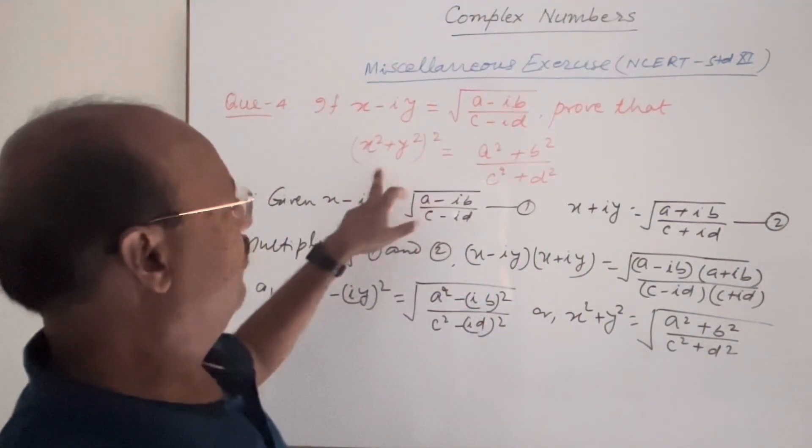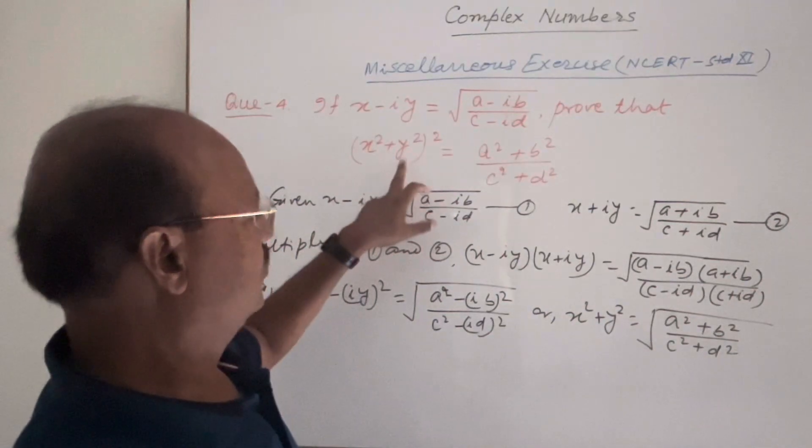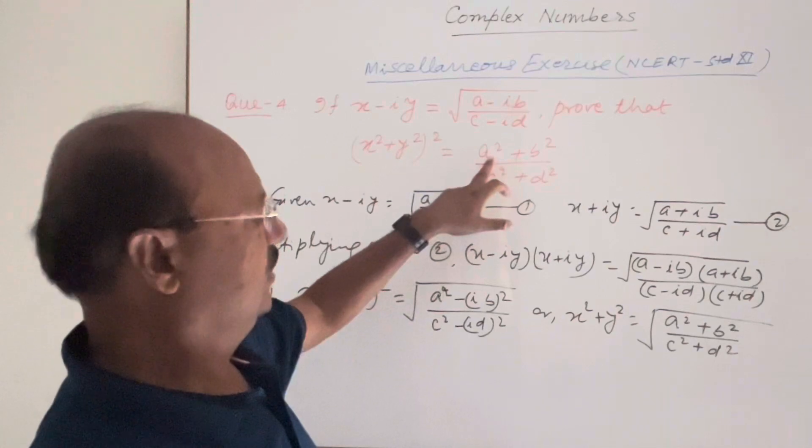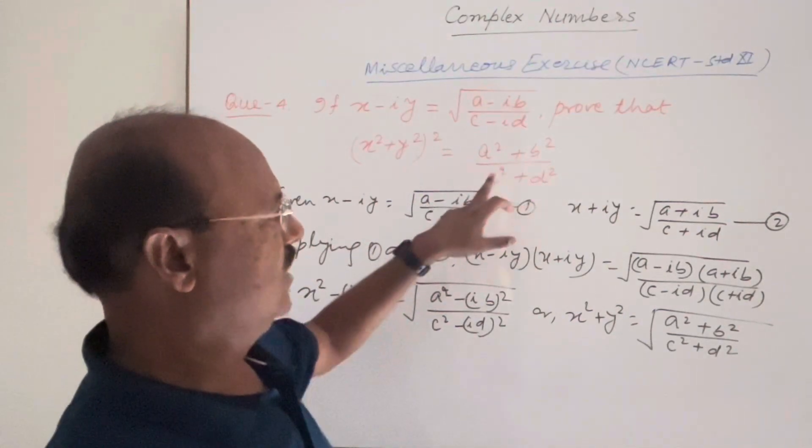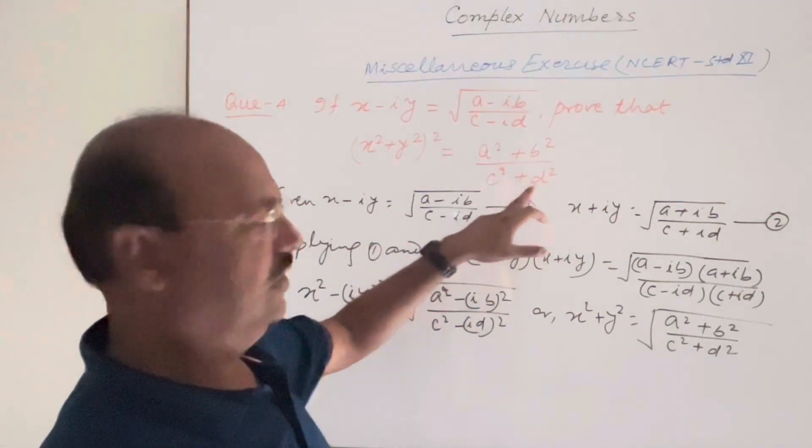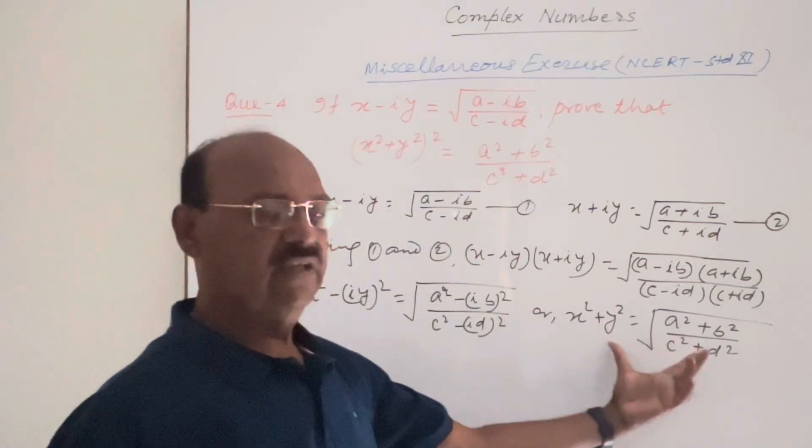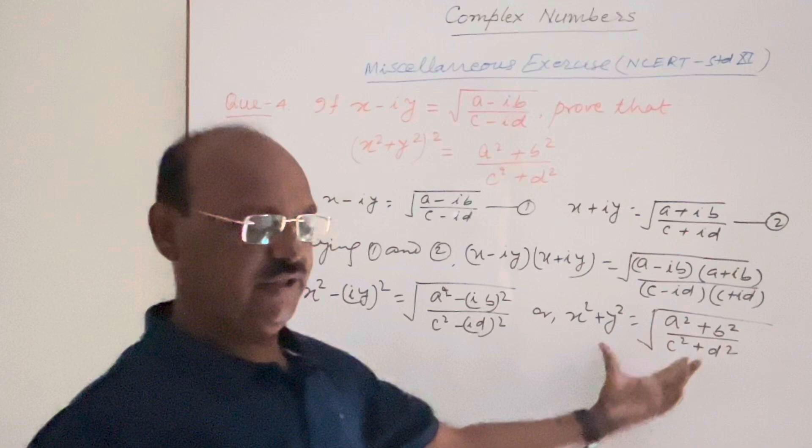Correct? You see here we have to prove x square plus y square whole square is equal to a square plus b square upon c square plus d square. So we can get this result by simply squaring both sides of this expression.